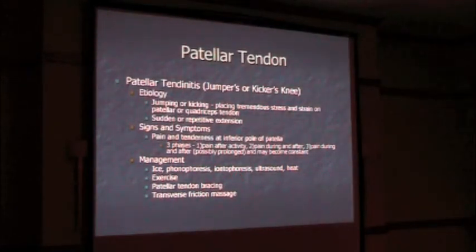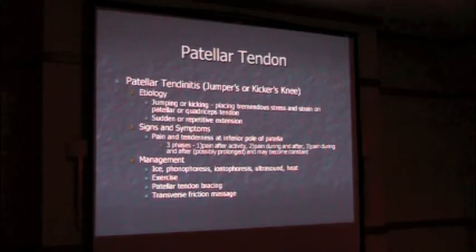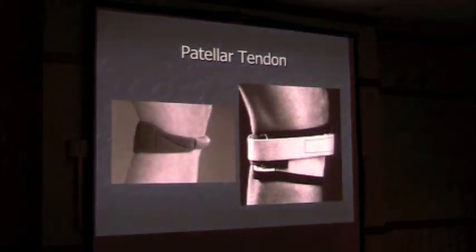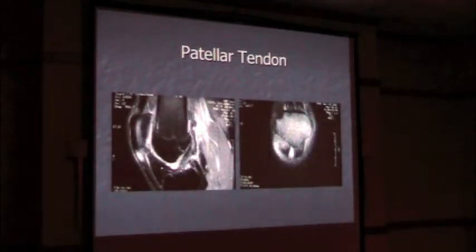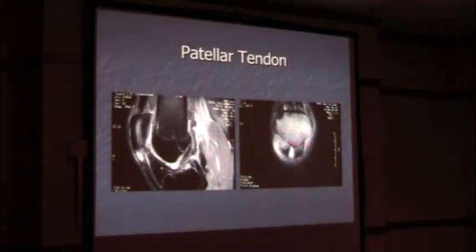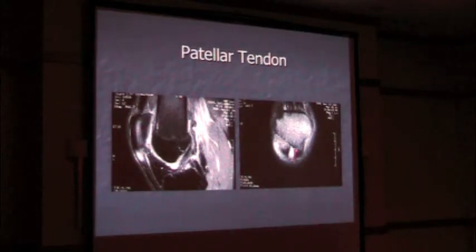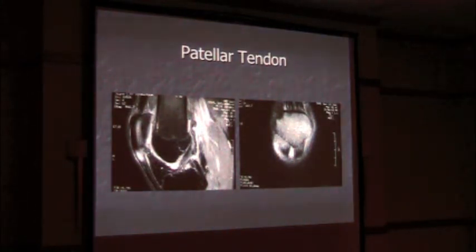Treatment includes ice, phonophoresis, iontophoresis, ultrasound, heat, exercise, patella tendon bracing, and transverse friction massage. The patella tendon brace is most commonly used to unload that tendon and let it heal. On MRI, you can see normal tendon fibers inserting at the inferior pole of the patella, and then the degenerative tearing of the intracentral third of the patella tendon that can be very painful. Sometimes we have to go in and remove that portion. Most patients get better with conservative treatment.